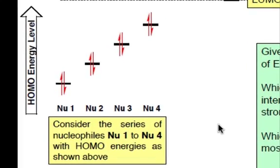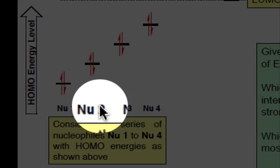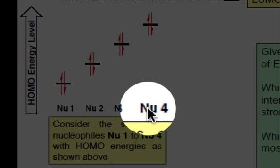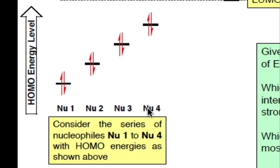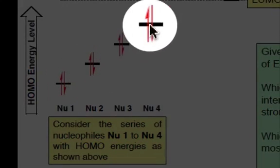Consider this series of nucleophiles. Nucleophile 1, nucleophile 2, nucleophile 3, and nucleophile 4. And they each have associated HOMO energies shown here, where 1 is lower than 2, lower than 3, lower than 4.